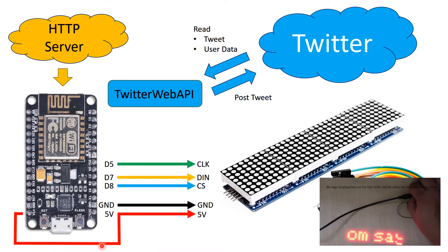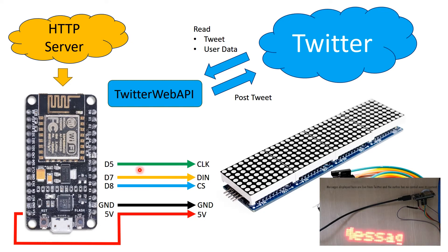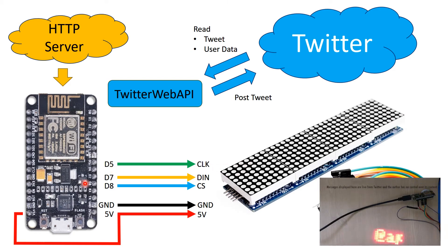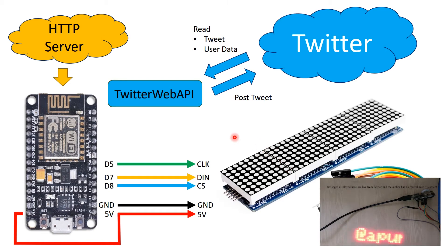We are going to use this NodeMCU connected to a display. This display is a simple dot matrix display, which is MAX7219 based — you can daisy chain these. The connection is straightforward: connect D5 to CLK, D7 to DIN, D8 to CS, ground to ground, and 5V input to the 5V of the dot matrix display.